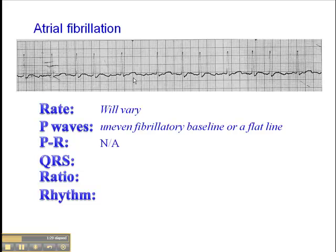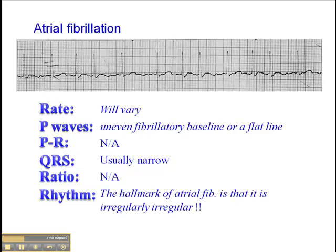The PR interval is not applicable in atrial fibrillation. The QRS complex is usually narrow. The ratio is not applicable if we don't have P waves. And the hallmark of atrial fib — this is where the diagnosis is made — the hallmark of atrial fibrillation is that it's irregularly irregular.